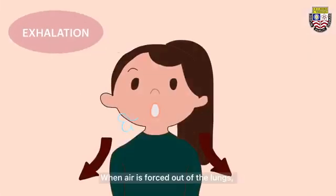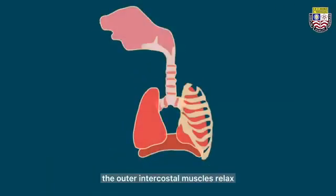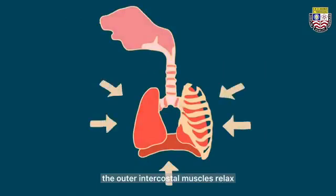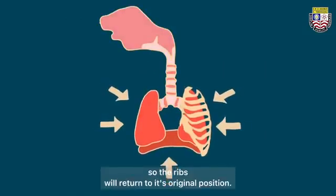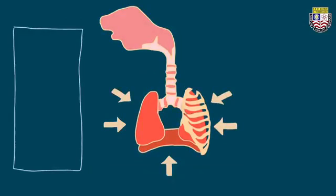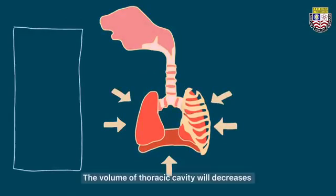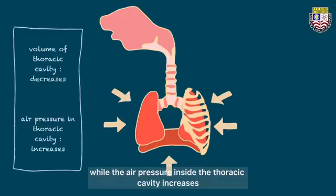When air is forced out of the lungs, the outer intercostal muscles relax so the ribs will return to their original position. The diaphragm will also relax and arch upwards. The volume of the thoracic cavity decreases while the air pressure inside the thoracic cavity increases.